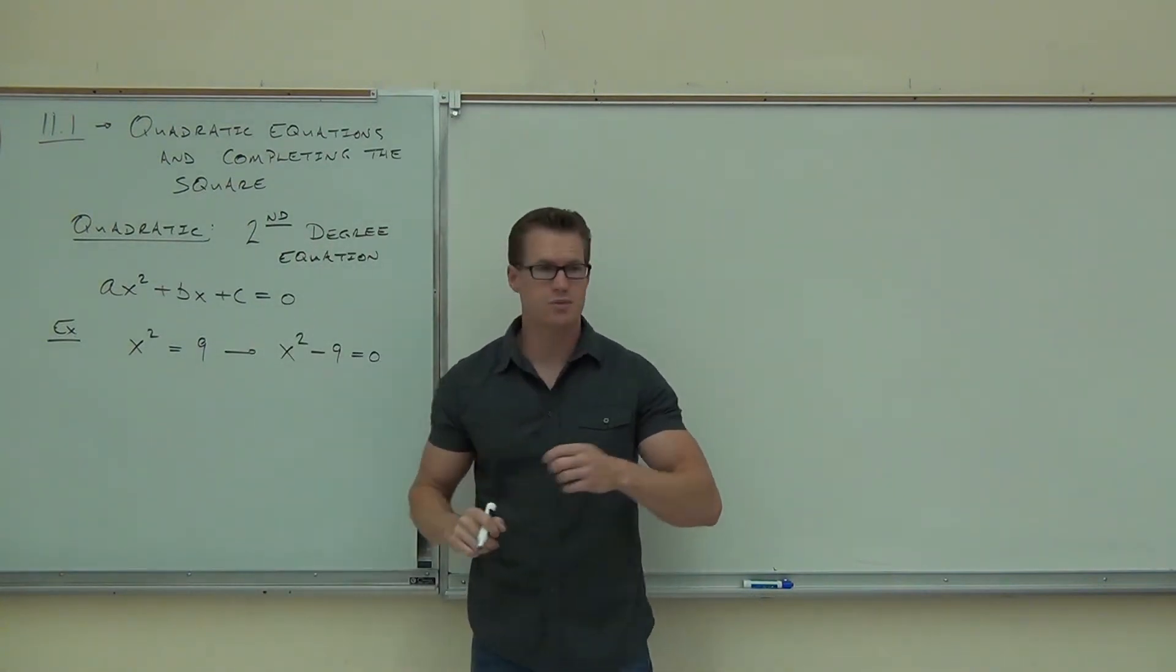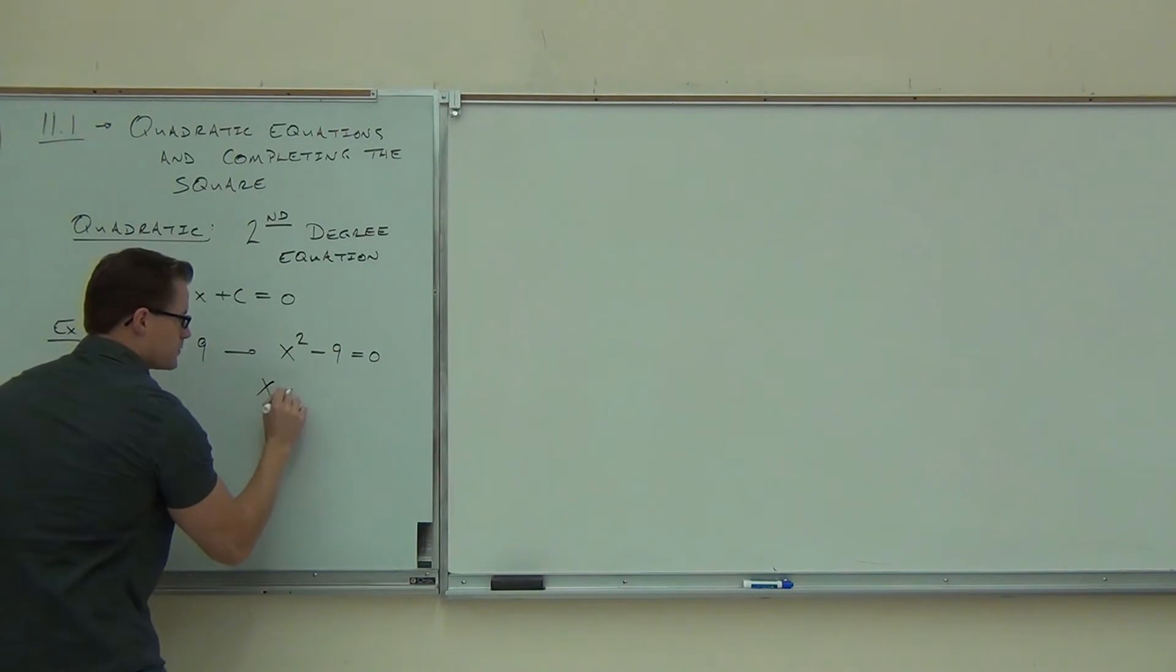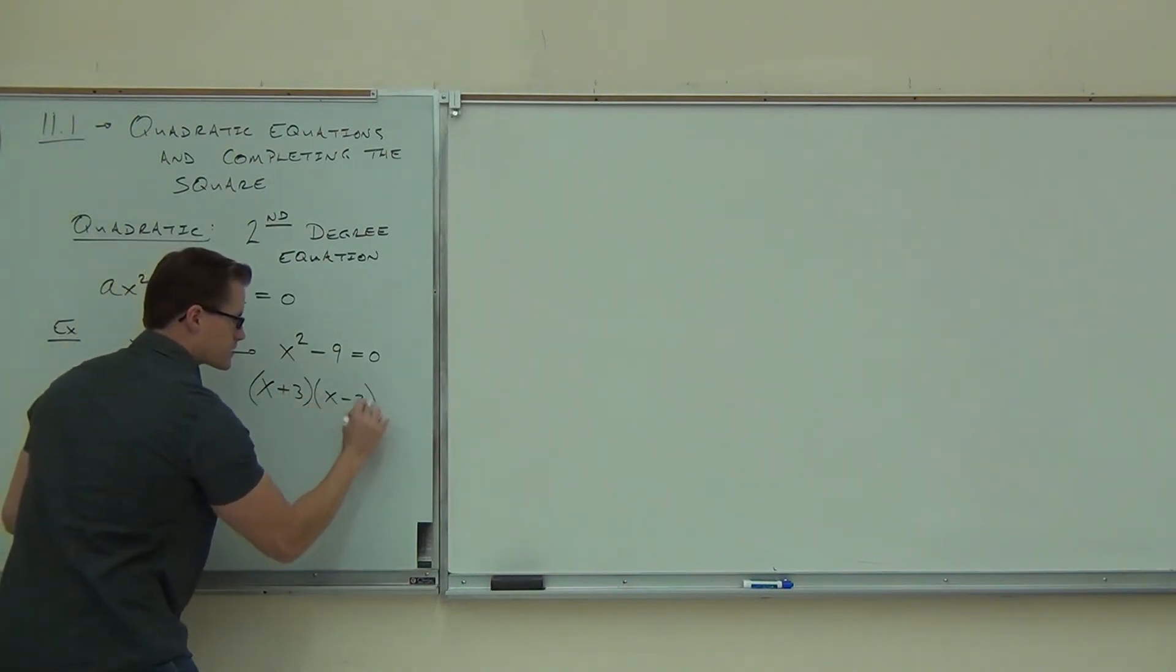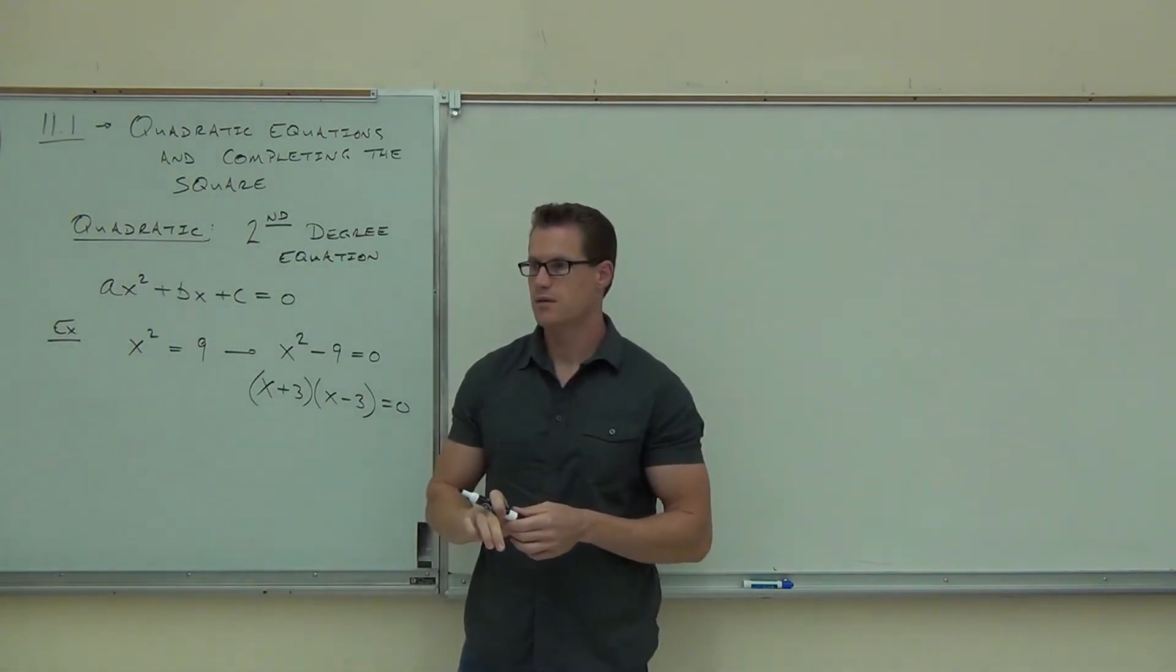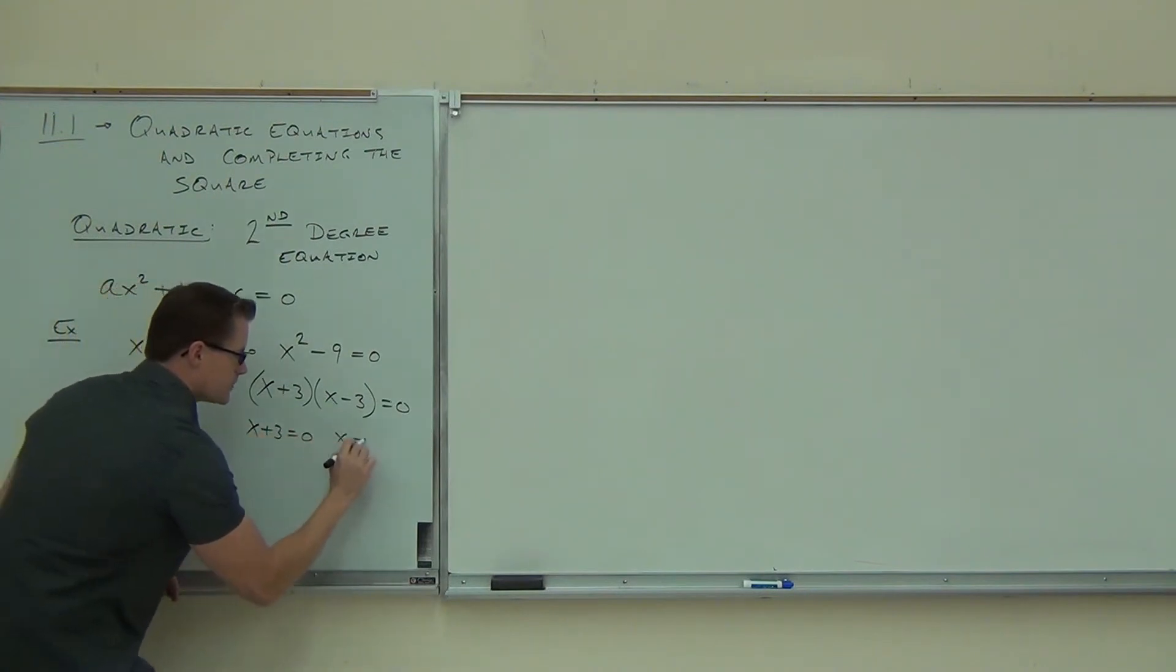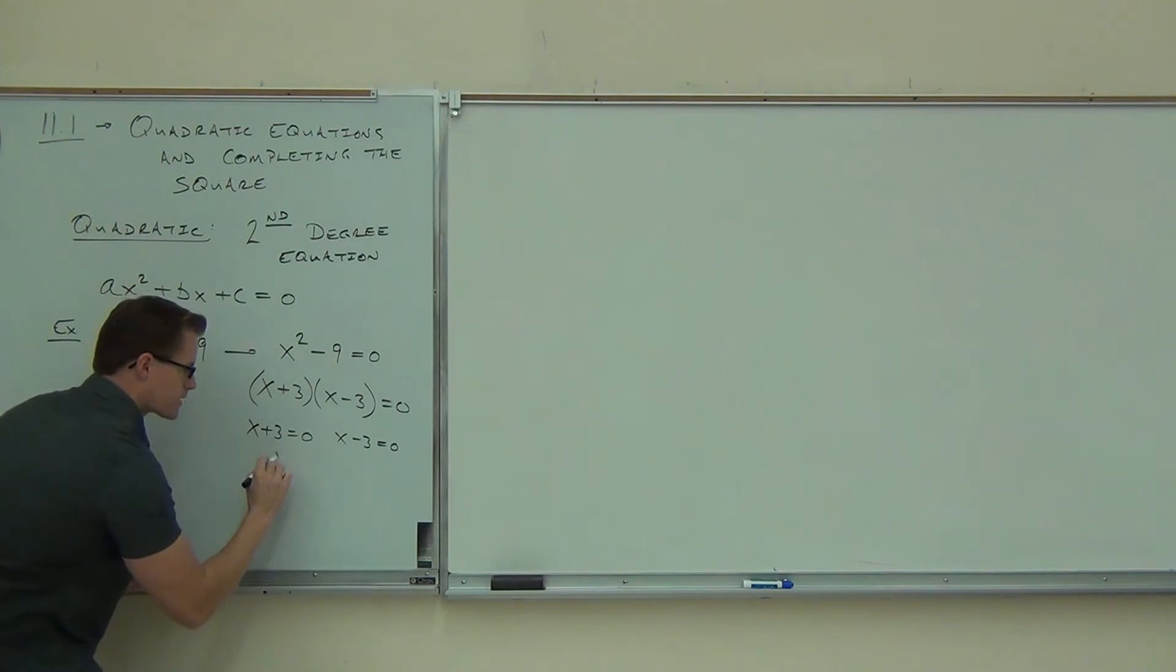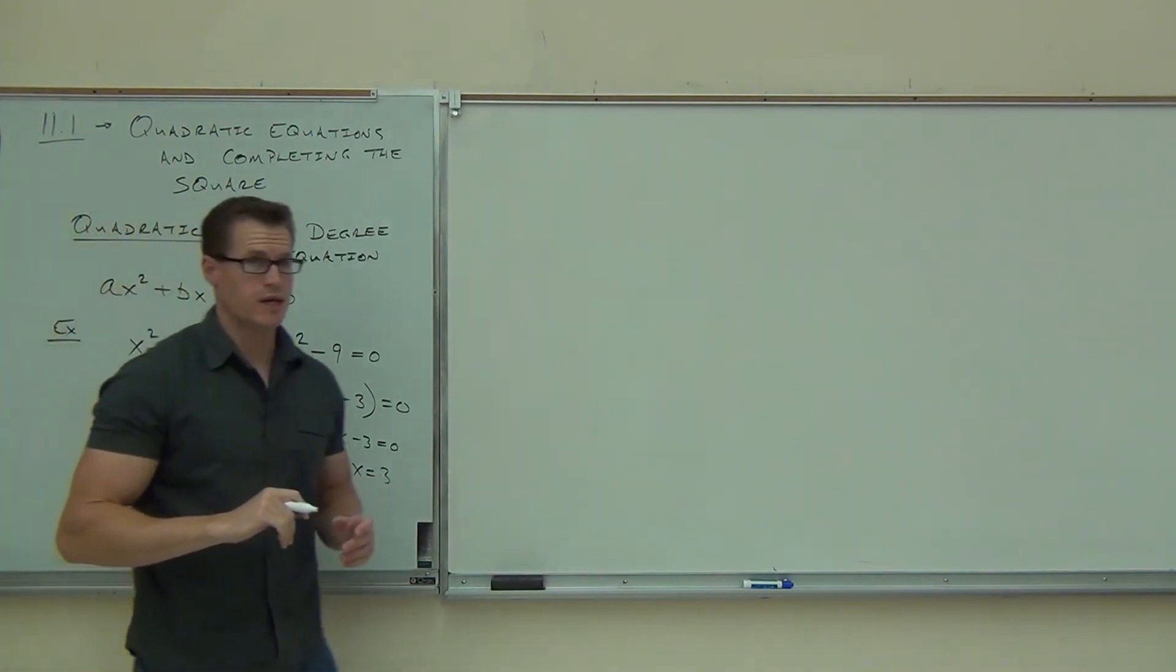Difference of squares. You all should be just Johnny on the spot with difference of squares, right? So, x squared minus 9, you say, oh, all right. This would be x plus 3, x minus 3 equals 0. So far, so good? And you go, okay, well, I'm not quite done yet. I would do x plus 3 equals 0, x minus 3 equals 0. Therefore, x would equal negative 3, x would equal positive 3.